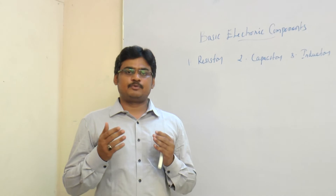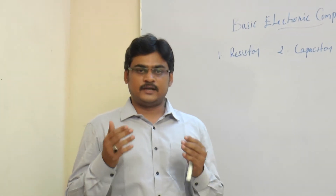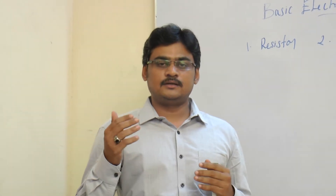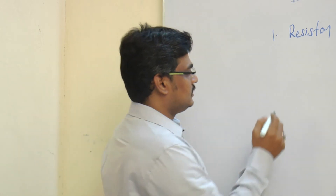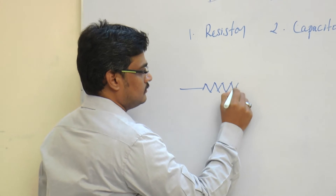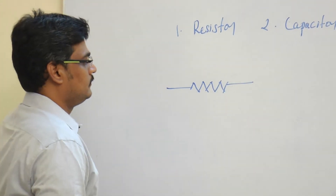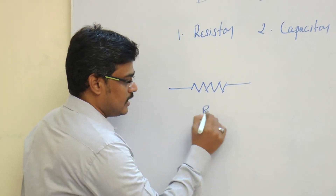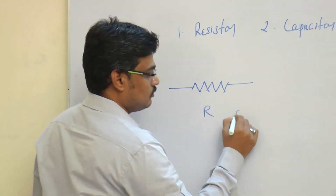A resistor has the property of resisting the flow of electrons — that is, it opposes the flow of electric current and converts electrical energy into heat energy, dissipating it to the surrounding environment. The resistor can be graphically represented as shown, and it is denoted by R, whose unit is Ohm.